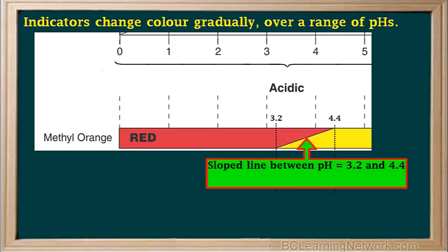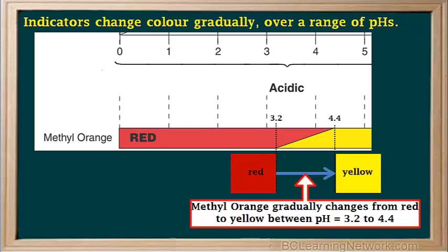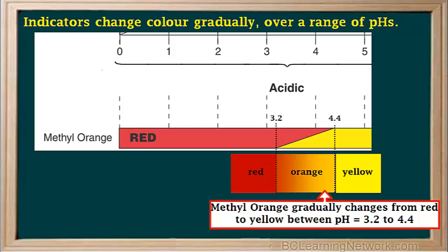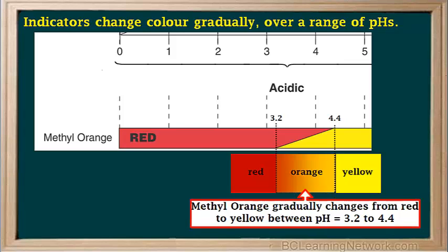Instead of changing abruptly at a certain pH, indicators change color gradually over a range of pHs. For example, methyl orange gradually changes from red to yellow between pH 3.2 and 4.4. Between 3.2 and 4.4, this indicator shows various shades of orange — more of a reddish orange close to pH 3.2 and more of a yellowish orange closer to pH 4.4. But it's sufficient to know that anywhere between 3.2 and 4.4, the color would be called orange.